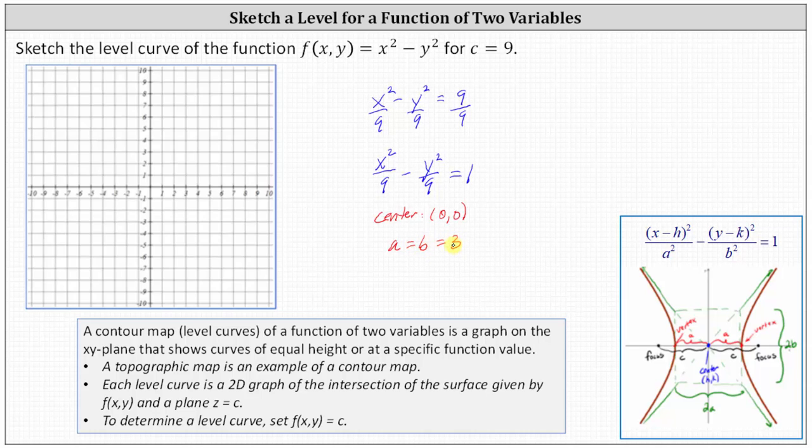And now to graph the hyperbola which is the level curve when c equals nine. Let's make a point at the origin the center. Notice the vertices are a units from the center to the right and left and since a is equal to three let's plot the point three comma zero. This is one vertex and then we'll go back to the origin and go left three units. This is the other vertex.